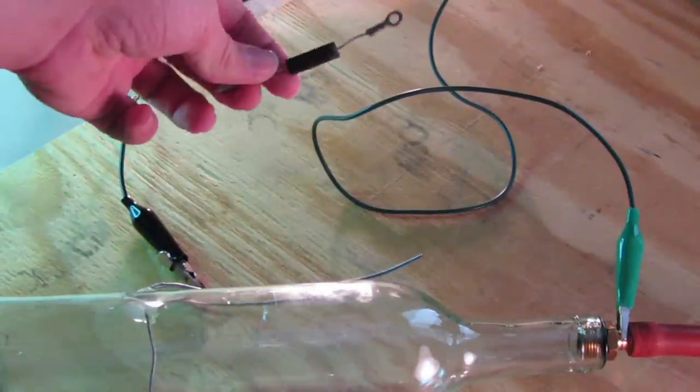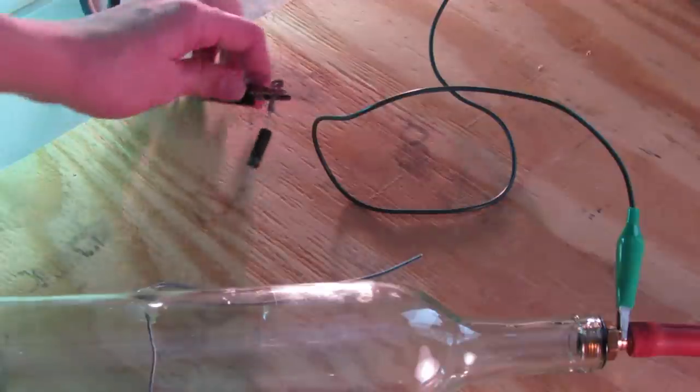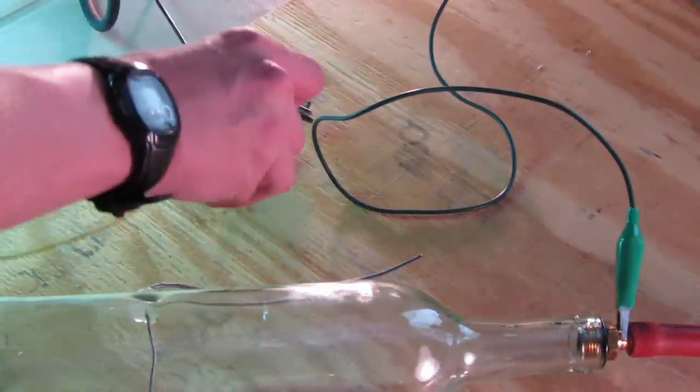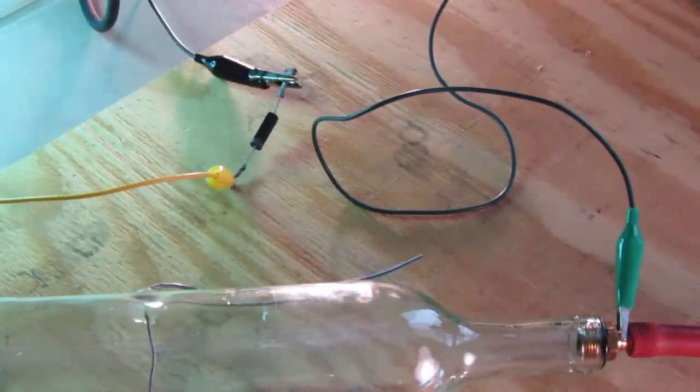That time I was just running the tube on an AC current, so this time I'm going to add in a high voltage diode to make it a half-wave rectified current and see the difference in the beam.